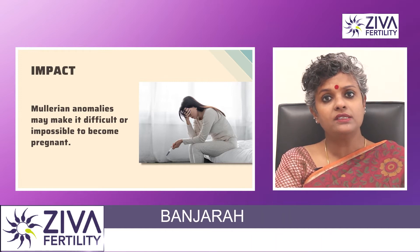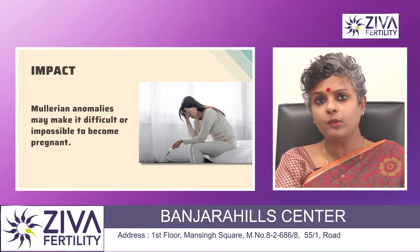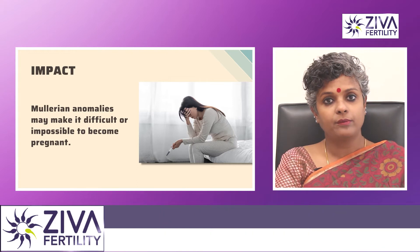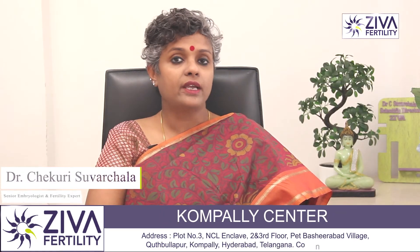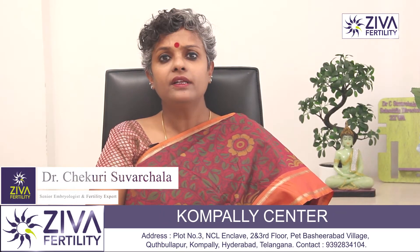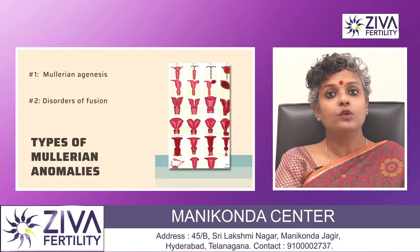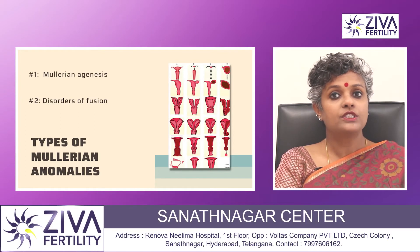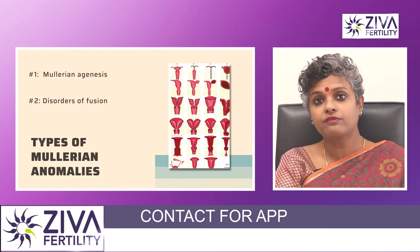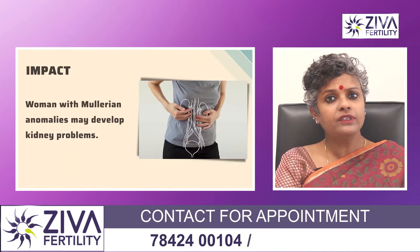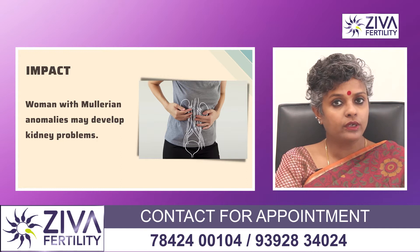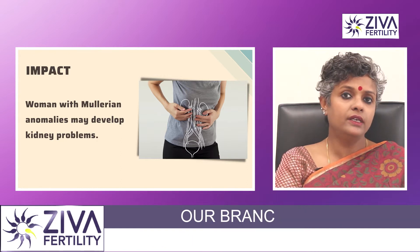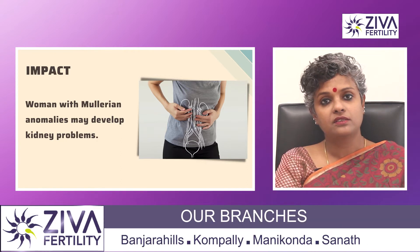These Mullerian anomalies may make it difficult or impossible for some women to get pregnant. The most common types of Mullerian anomalies are Mullerian agenesis, which is the failure to form a uterus and fallopian tubes, and disorders of fusion, which occur when the Mullerian ducts fail to come together correctly. Often kidney problems develop in women with Mullerian abnormalities, mainly because the kidneys develop next to the Mullerian system.